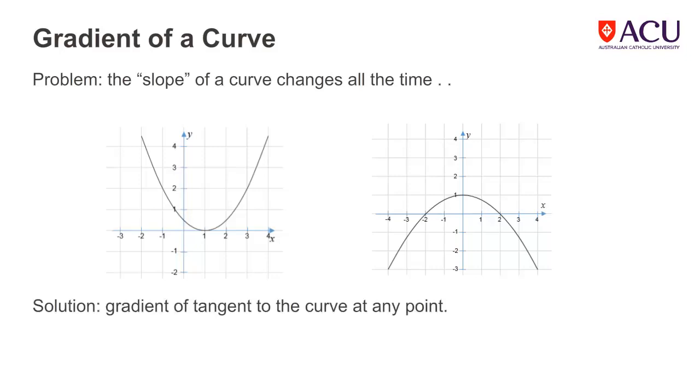The solution is that we can calculate the gradient of the curve at any particular point on the curve. This is done by drawing a tangent to the curve at the point where we want to calculate the slope, and then finding the gradient of that tangent. The gradient of the curve at that point, then, will be equal to the gradient of the straight line tangent to the curve at that point.